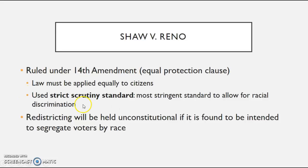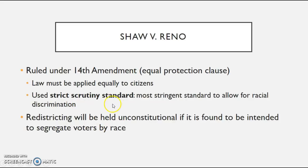The Equal Protection Clause operates in both Baker v. Carr — ruling against malapportionment — and in Shaw v. Reno, where it prohibits creating minority-majority districts as that too violates equal protection. What also comes out of Shaw v. Reno is the strict scrutiny standard: if racial discrimination of any kind is involved, you must pass this very difficult test. Ultimately, redistricting will be unconstitutional if found to be intended to segregate voters by race, and using the 14th Amendment's Equal Protection Clause, that is illegal.